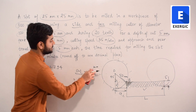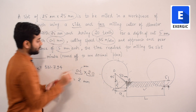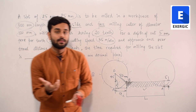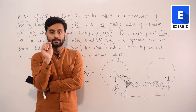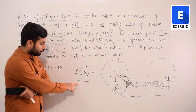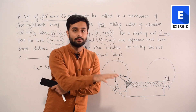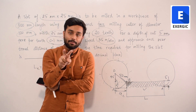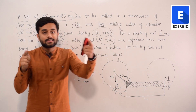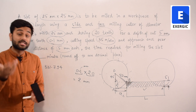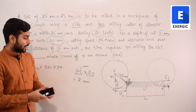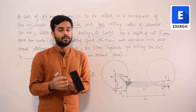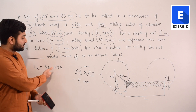In one revolution it moves 2 mm. To find the feed rate (mm/min), we need revolutions per minute. The cutting speed is the peripheral speed of the cutter. Using V = R·ω, with V = 35,000 mm/min and R = 50 mm, we get ω = 2πn, so n = 35,000 / (50 × 2π) = 350/π rpm.